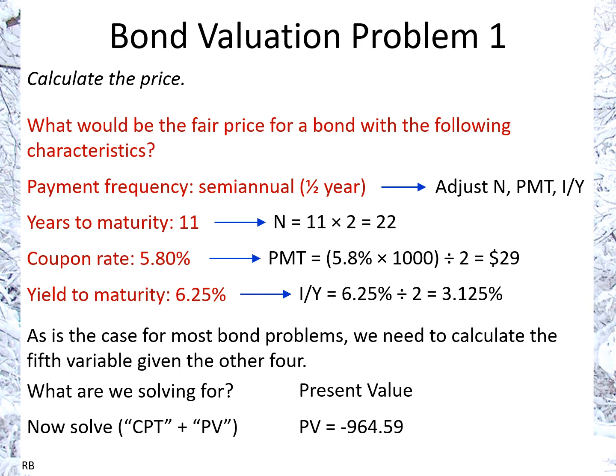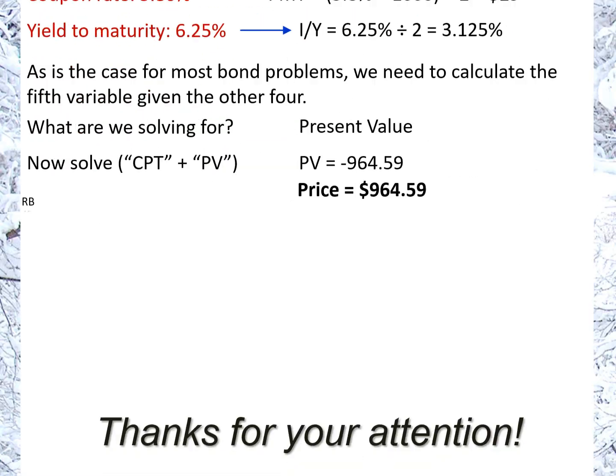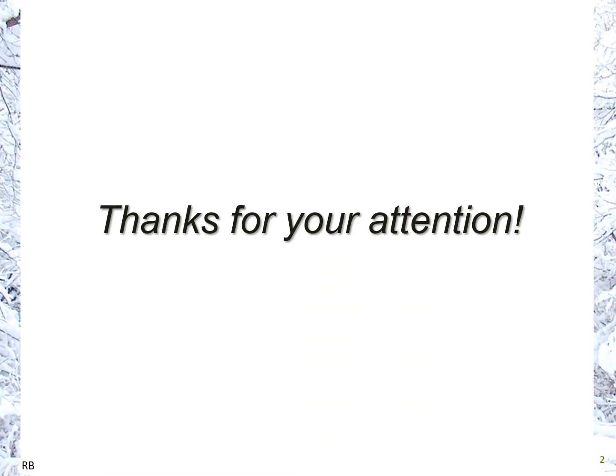The negative sign is just how the calculator handles the positive cash flows from the payments and the future value. We also need to enter FV as $1,000, because that's the payment we'll receive at the end of the period. So PV equals minus $964.59, meaning the fair price of the bond is $964.59. That's how we do it — hopefully that helped. Thank you for your attention.